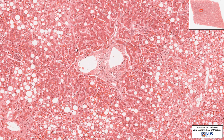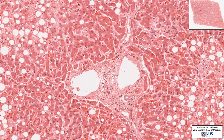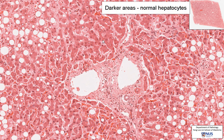Around this, there are actually quite normal trabeculae of hepatocytes. We can see that the cells are polygonal, they have quite dense granular pink cytoplasm, and relatively small rounded nuclei.